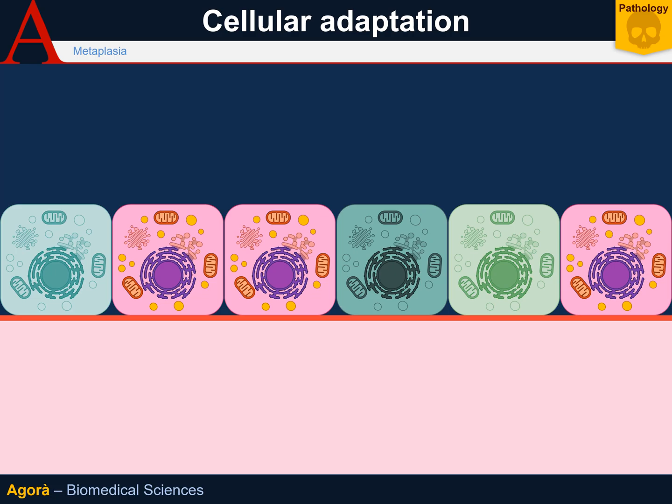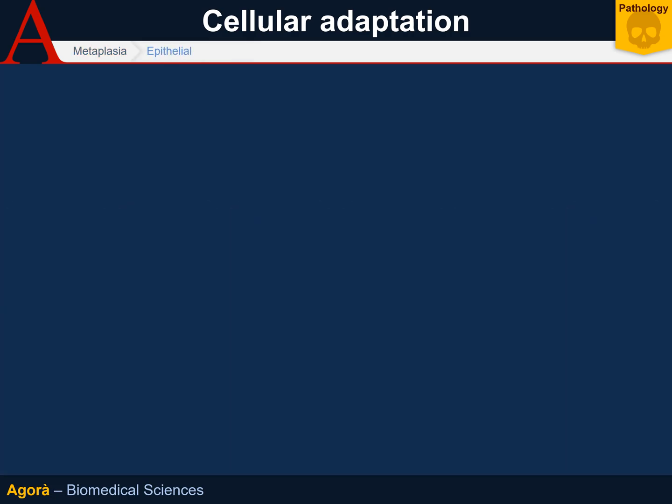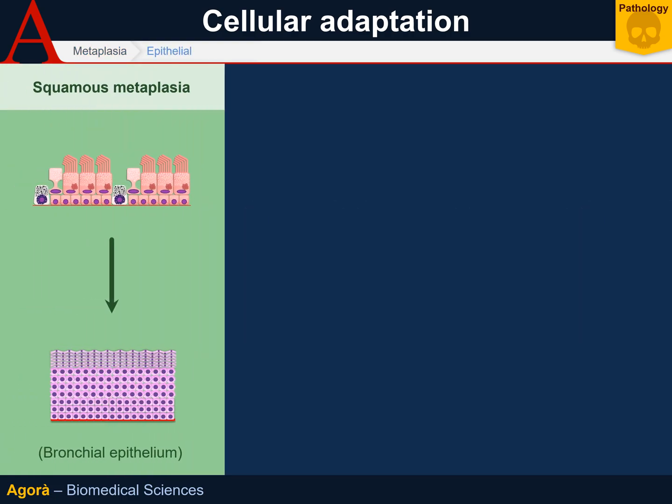Let's take a look at some examples of epithelium metaplasia. One of the most famous is squamous metaplasia, typical of frequent smokers' bronchi, where the typical cylindric ciliated epithelium with goblet cells is replaced by a non-keratinized or keratinized squamous epithelium.